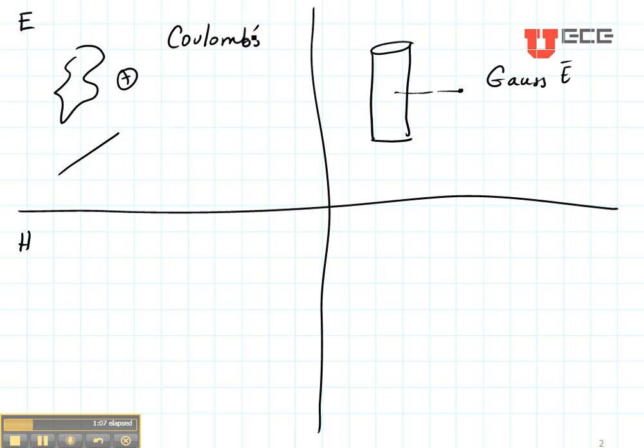Now remember I said that the Biot-Savart is to the magnetic field like Coulomb's Law is to the electric field. So down here, if I have a random current distribution, maybe I have a combination of line currents, maybe I have a few point currents, maybe I have some surfaces, then I can use the Biot-Savart Law.